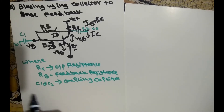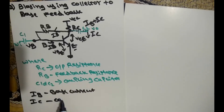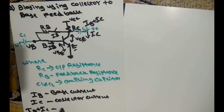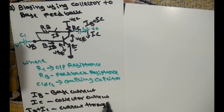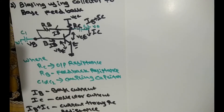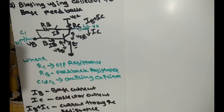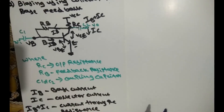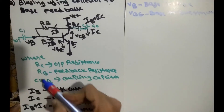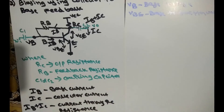The currents present are: IB (base current), IC (collector current or output current), and IB plus IC which flows through RC resistance. The voltages present are: VCC (DC power supply), VCE (collector to emitter voltage), VB (base voltage), and VBE (base to emitter voltage). In summary, this circuit uses four components, three types of current, and four types of voltage.